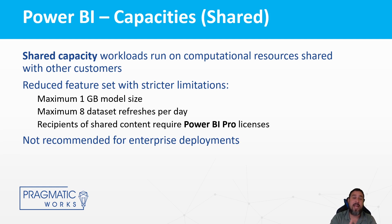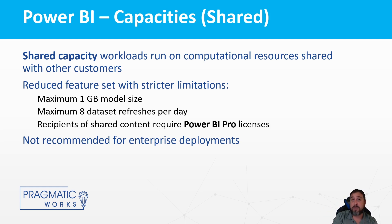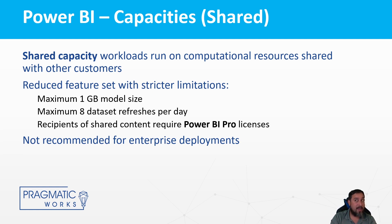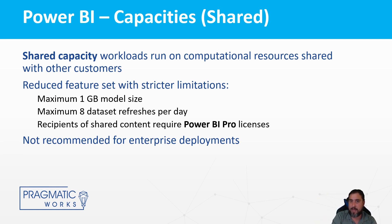By standard means, the MSRP for a Pro license is $9.99 per month per user. In a shared capacity, someone accessing a report through the service must have a Pro license, even if they are only read-only users. There are other methods around this, but the main best practice for sharing with users who don't need a license is going to be in the dedicated capacity realm. There's also something called embedded capacity, but I'll discuss that in a moment.